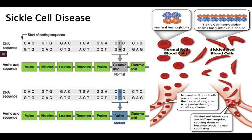Additionally, sickled red blood cells, which are stiff and inflexible, can get stuck in small blood vessels. These episodes deprive highly vascularized tissues and organs — such as the lungs, kidneys, spleen, and brain — of oxygen-rich blood, and can lead to organ necrosis and damage.